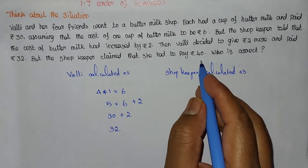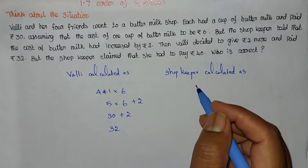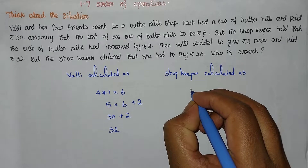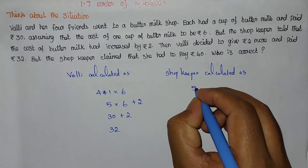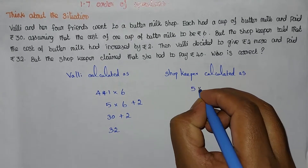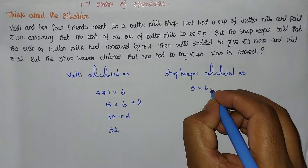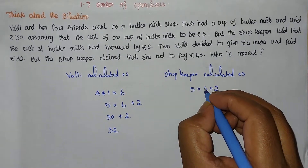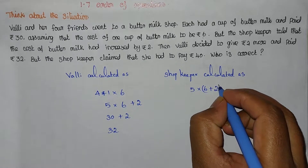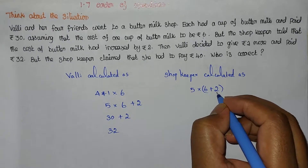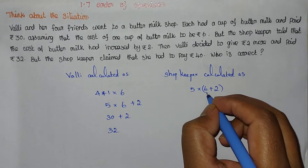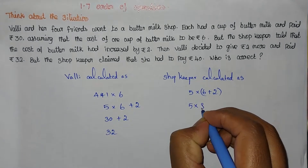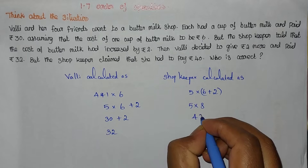The shopkeeper's total comes to 40 rupees. The shopkeeper calculated: each buttermilk costs 2 rupees extra, so 6 plus 2 equals 8. Then 5 into 8 equals 40. So the shopkeeper's expression is 5 into 6 plus 2, which gives a total of 40.